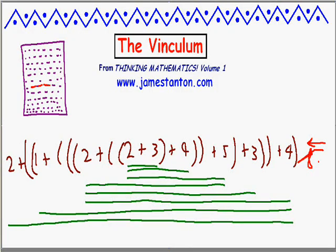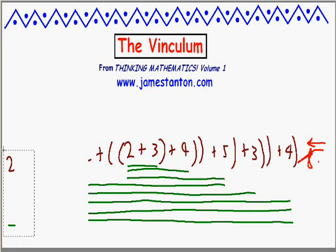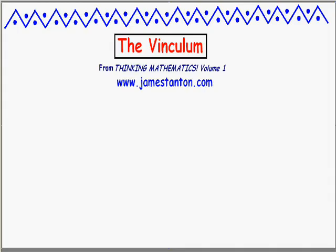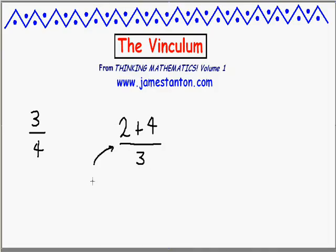The vinculum is still being used in mathematics today, appearing in a number of surprising places. Think about whatever you see as a horizontal bar in mathematics. One is actually in fractions. If I wrote 2 plus 4 all divided by 3, that horizontal bar is called a vinculum — and it really is grouping. It's saying this entire numerator, this entire group of 2 plus 4, is to be divided by 3. So it's not just 2 divided by 3 and then add 4 — it's all of 2 plus 4, which is 6, divided by 3.